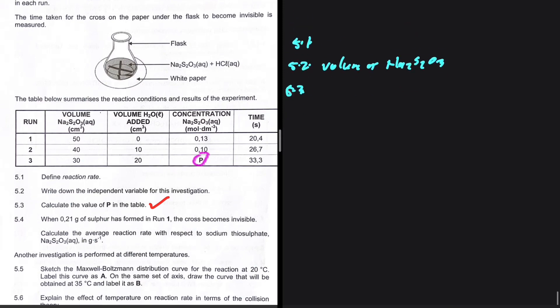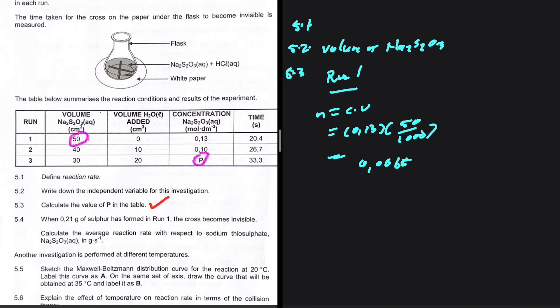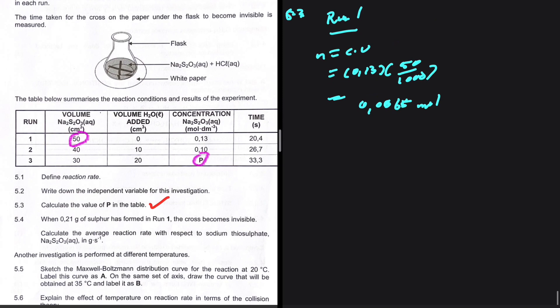Let's pay attention to run one. We're given the volume and the concentration. To find the number of moles, we calculate 0.13 multiplied by 50 divided by 1000, which gives us 0.0065. So in 50 cm³ of sodium thiosulfate, we have 0.0065 moles.